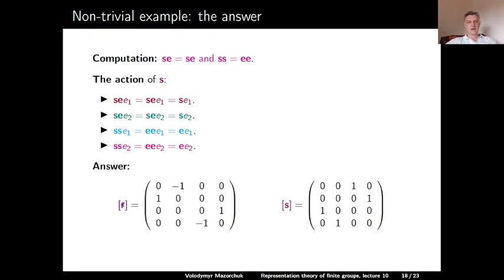The matrix of R in the basis {Ee₁, Ee₂, Se₁, Se₂} is: first column (0,1,0,0), second column (-1,0,0,0), third column (0,0,0,-1) — wait, correcting: since Re₁=e₂ and Re₂=-e₁ for the EV block, and R·Se₁=-Se₂ and R·Se₂=Se₁ for the SV block, the matrix of R is [0,-1,0,0; 1,0,0,0; 0,0,0,1; 0,0,-1,0]. The matrix of S is [0,0,1,0; 0,0,0,1; 1,0,0,0; 0,1,0,0]. This completes the example.